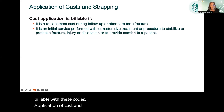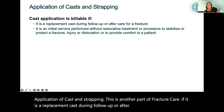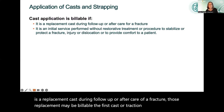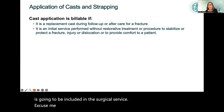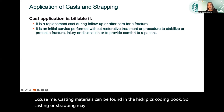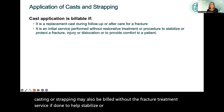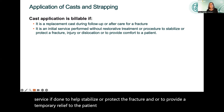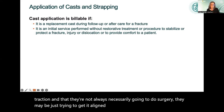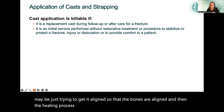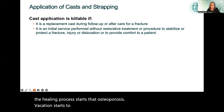Application of cast and strapping is another part of fracture care. If it is a replacement cast during follow-up or aftercare of a fracture, those replacements may be billable. The first cast or traction device placed is included in the surgical service. Casting materials can be found in the HCPCS coding book. Casting or strapping may also be billed without the fracture treatment service if done to help stabilize or protect the fracture, or to provide temporary relief to the patient.